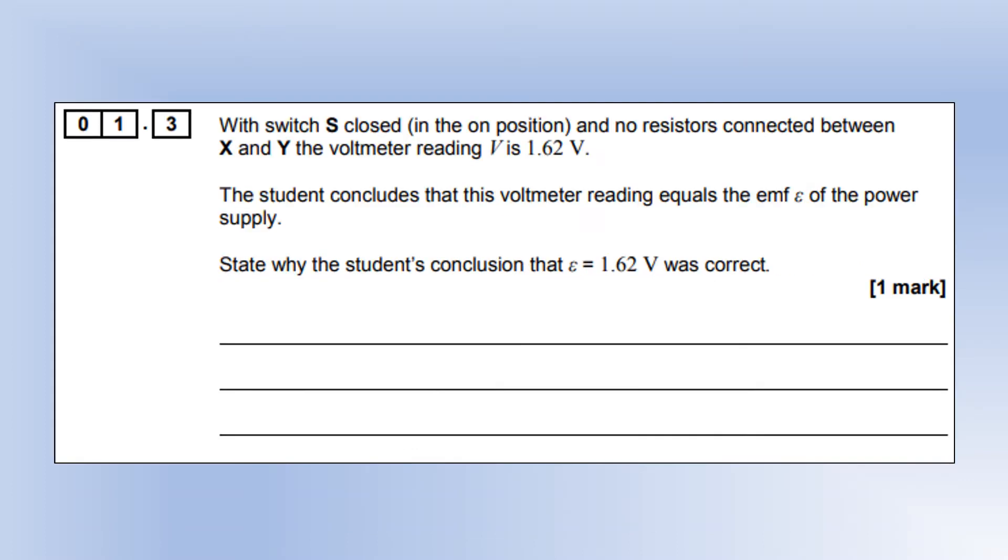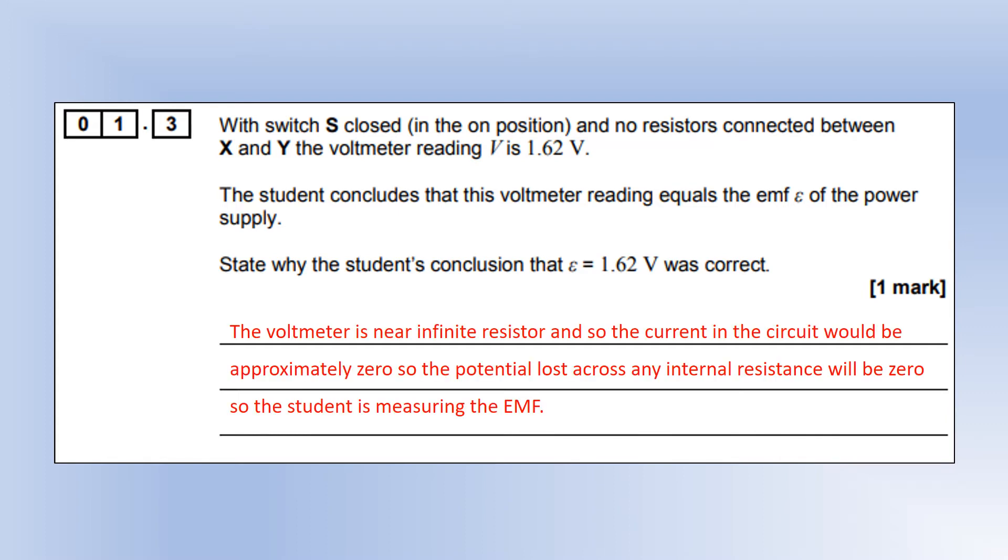With the switch closed and no resistance connected between X and Y, the voltmeter reading is 1.62 volts. The student concludes that this voltmeter reading equals the EMF of the power supply. State why the student's conclusion that the EMF is 1.62 was correct. Although connecting the voltmeter creates a complete circuit, a voltmeter is considered to be an infinite resistance.